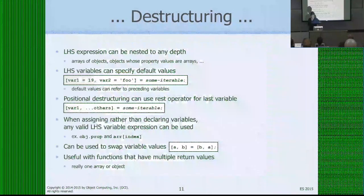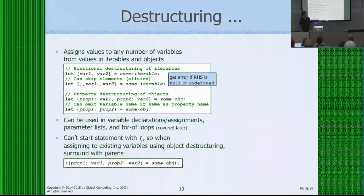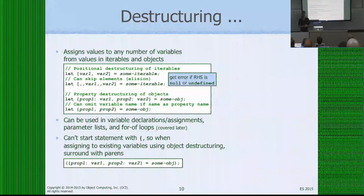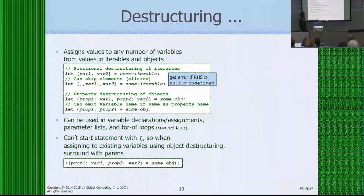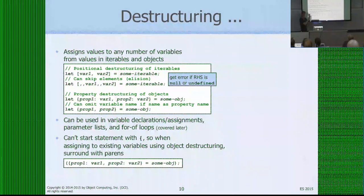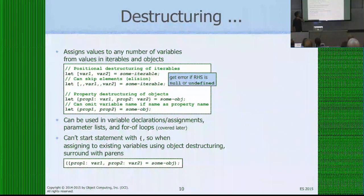The next big topic is destructuring. Destructuring works with things that are iterable, like arrays and strings. You put an iterable on the right-hand side of an assignment and on the left say how you want to extract things out of it. There are two forms: positional destructuring and object destructuring. In positional, you have an array pattern on the left — you're specifying positions within the iterable to extract. You can skip elements by using commas to say you don't care about certain positions.